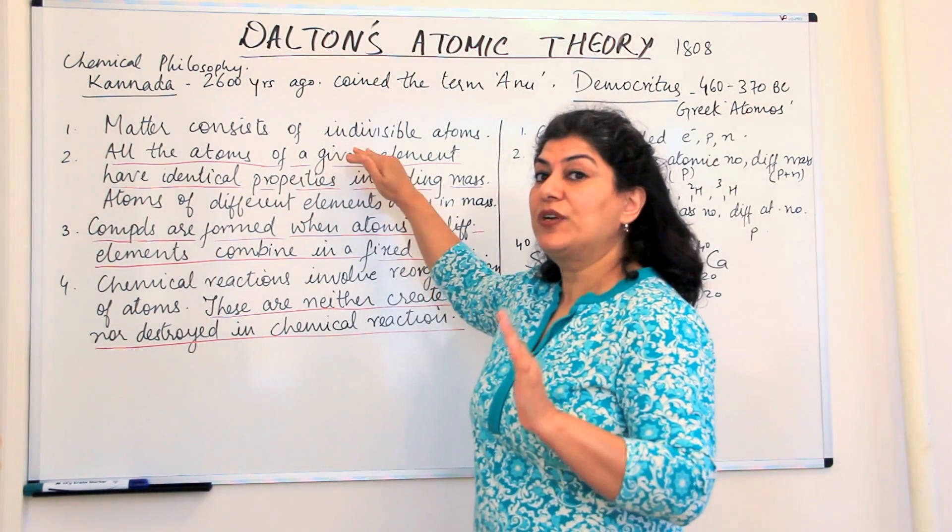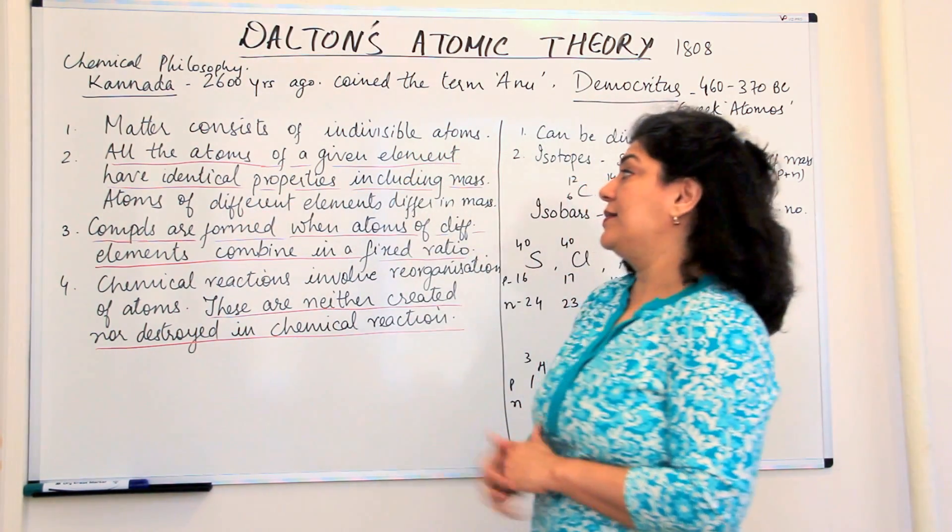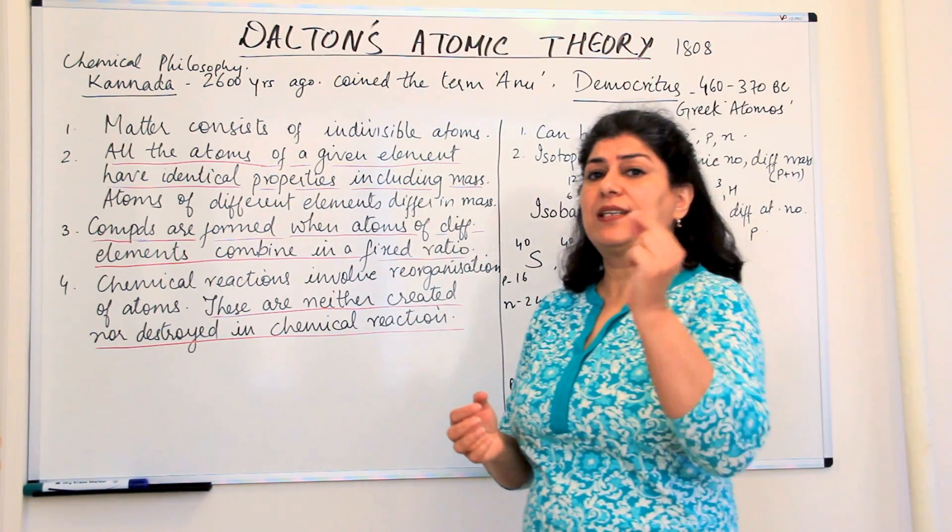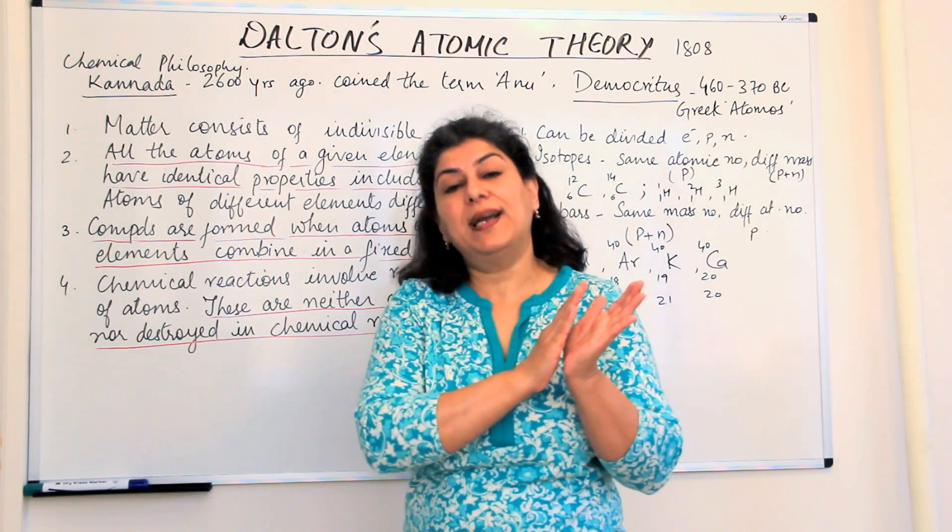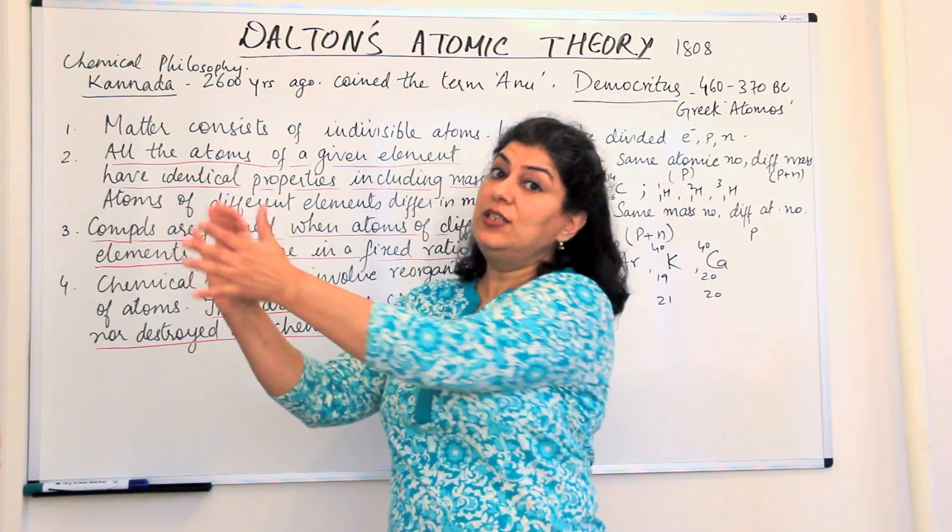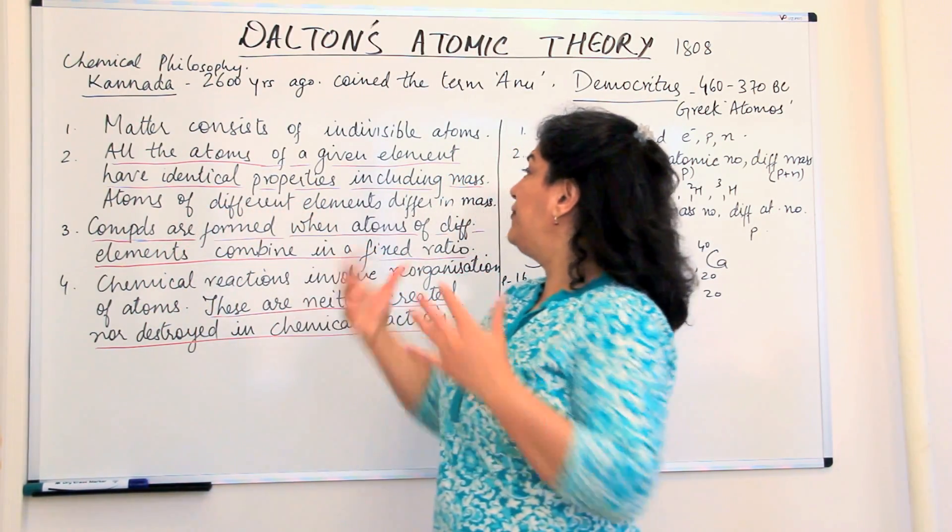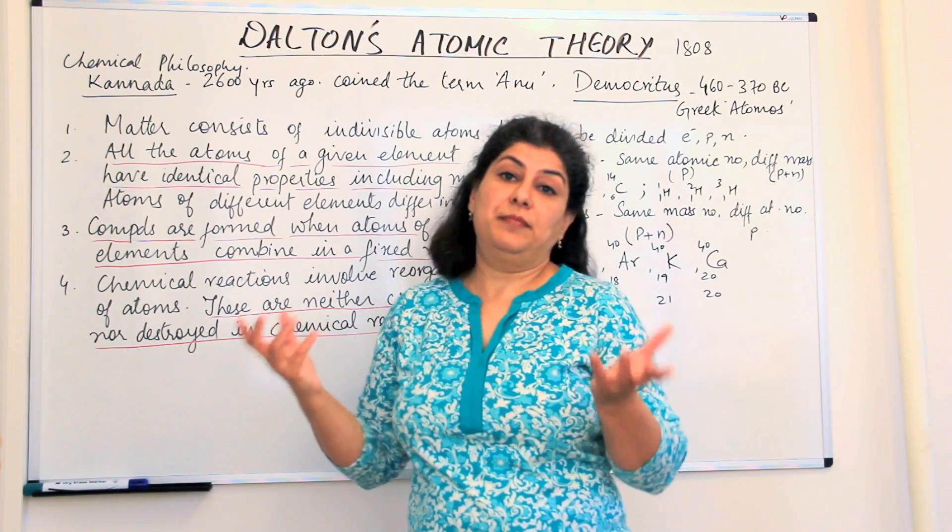The second point was that all the atoms of a given element have identical properties including mass. All atoms of a given substance have identical properties including mass. If you take atoms of one element, they should all be identical, and if you take atoms of another element, they should also be identical to each other.